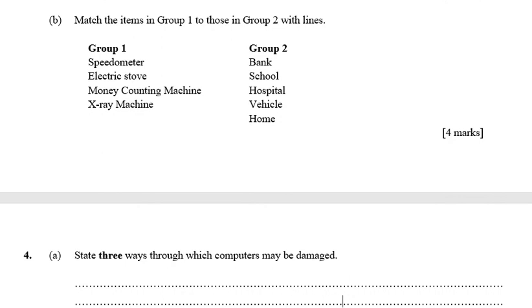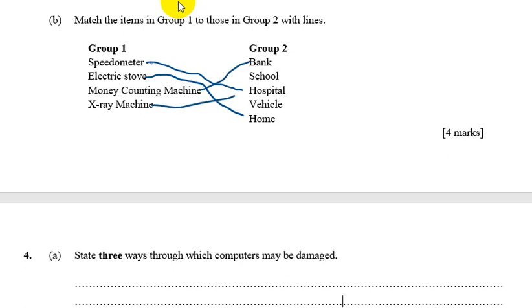Next, we need to match items to the areas where they are used. A speedometer is used at a hospital. An electric stove is used at home. A money counting machine is used at a bank, though it can also be used at a school. An X-ray machine is used in the hospital.